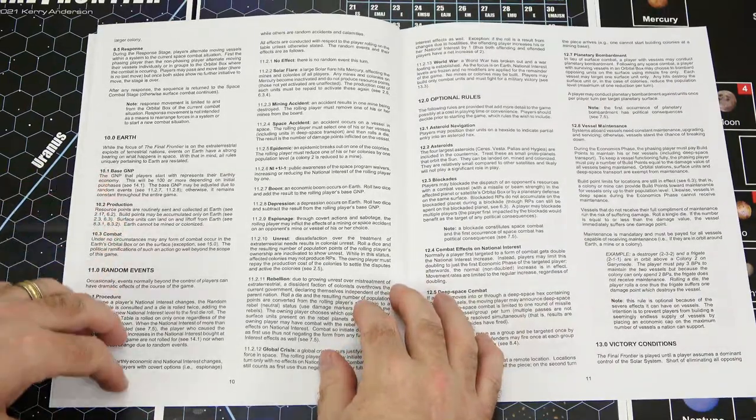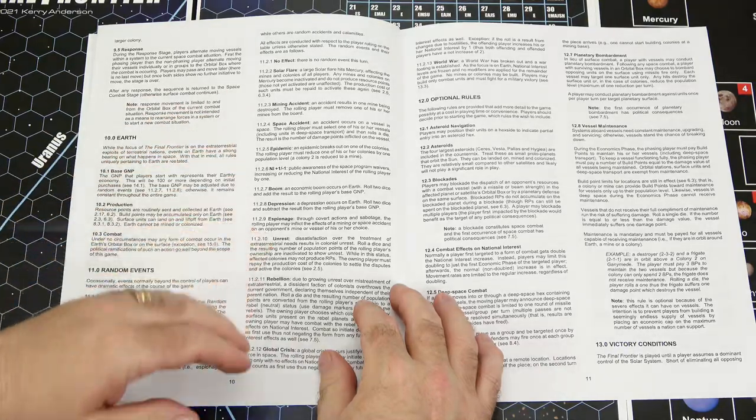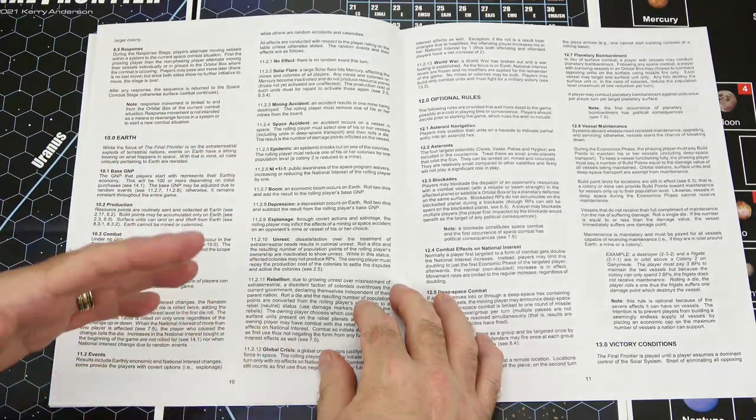Surface combat is explained to you. Then we get into Earth, random events, and there are some pretty cool random events: solar flares, mining accidents, unrest, rebellions, global crisis, things like that.